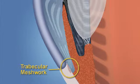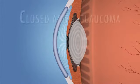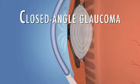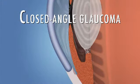A less common form of glaucoma, called closed-angle glaucoma, occurs when the drainage angle of the eye becomes blocked.